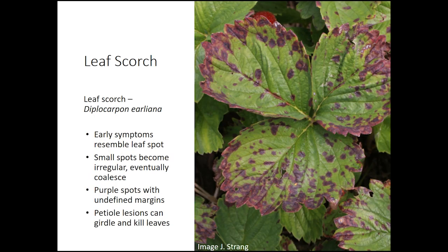Leaf scorch symptoms resemble leaf spot early in the season. Spots eventually become irregular and coalesce. The spots remain purple and you don't get that white or gray center — the margins of those spots are undefined or irregular. Petiole lesions are common and can girdle petioles and kill entire leaves.